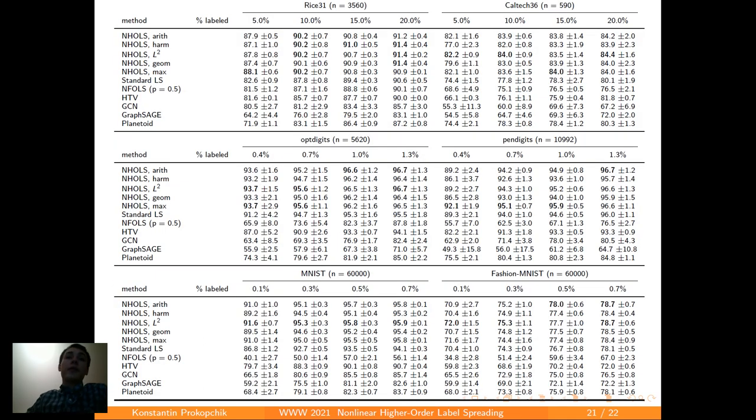Here we present the results of the cross-validation on all of these algorithms with all six different data sets. For RISE31 and Caltech36 we use much higher percentages of known labels because these data sets are quite small. And you see that the results here are much better for any setting basically.